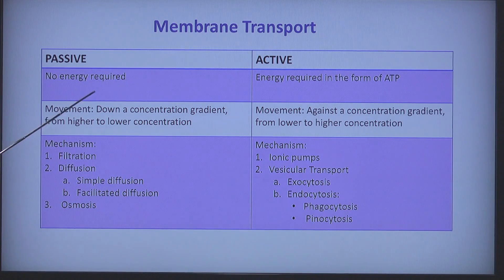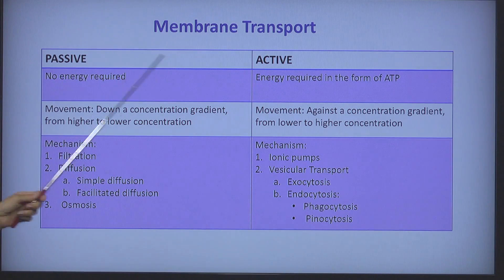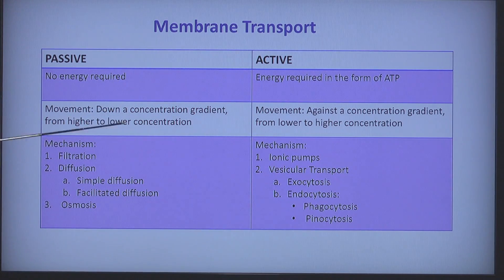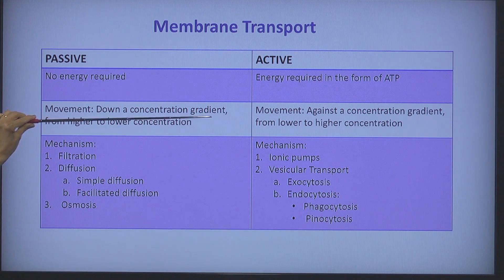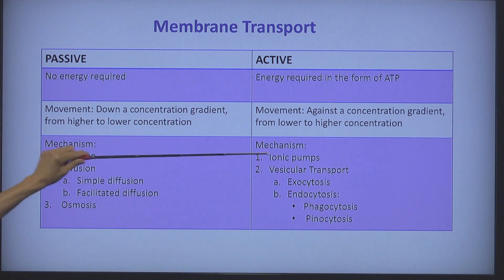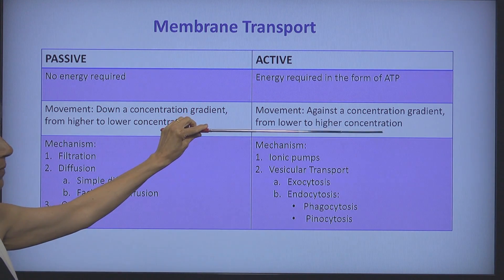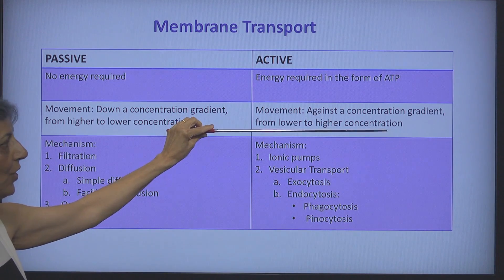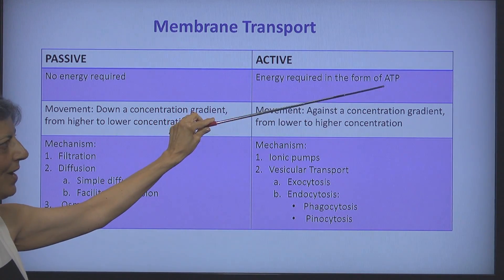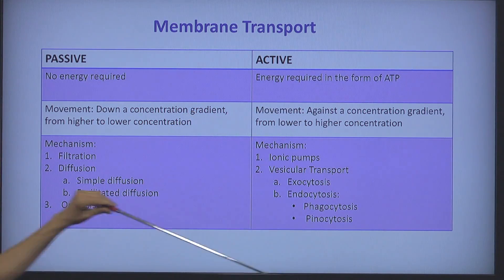Either by a passive process or an active process. In the passive process, no energy is required — no ATP is going to be used up by the cell. In active transport, we need to use ATP. In the passive process, we are moving substances from the side with greater concentration to lower concentration — down a concentration gradient. In active transport, we do the exact opposite: moving substances from an area of lower concentration to higher concentration, which is why we need ATP.